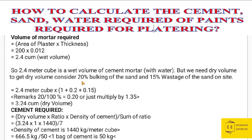To get the dry volume from the wet volume, we consider 20% bulking of the sand and 15% wastage of sand on site. We add both factors. For every cubic meter, the volume increases 20% due to bulking and 15% for wastage. So we multiply the wet volume of 2.4 cubic meters by the factor: 1 + 0.20 + 0.15, which equals 1.35.